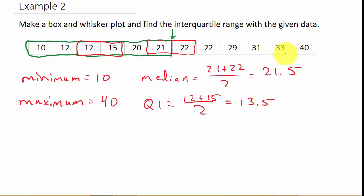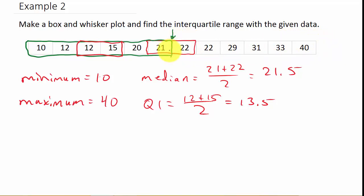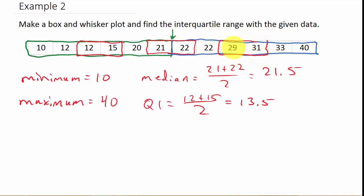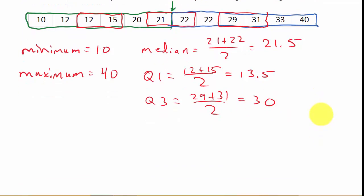And the same thing for Q3 — some will use the upper half not including the 22, but some will include it, and the way I do it I include that number. So Q3 is the average of the two middle numbers: 29 plus 31 over 2, which gives me 30. Now we have all of our information.